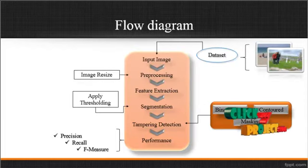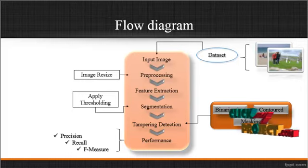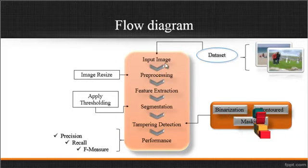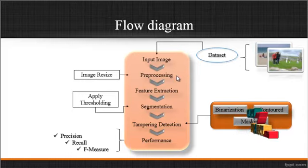Now we are going to discuss about the flow diagram for the process. This is the overall flow structure. At first, the input image is taken from the dataset. The dataset is the holder which consists of several input images. After getting the input image from the dataset, the preprocessing is carried out.